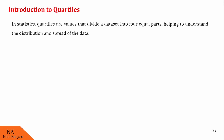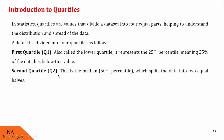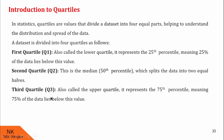In statistics, quartiles are the values that divide the dataset into four equal parts, helping to understand the distribution and spread of the data. The first quartile, Q1, also called the lower quartile, represents the 25th percentile — meaning 25% of the data lies below this value. The second quartile, Q2, is the median, that is the 50th percentile, which splits the data into two equal halves. The third quartile, Q3, also called the upper quartile, represents the 75th percentile — meaning 75% of the data lies below this value.